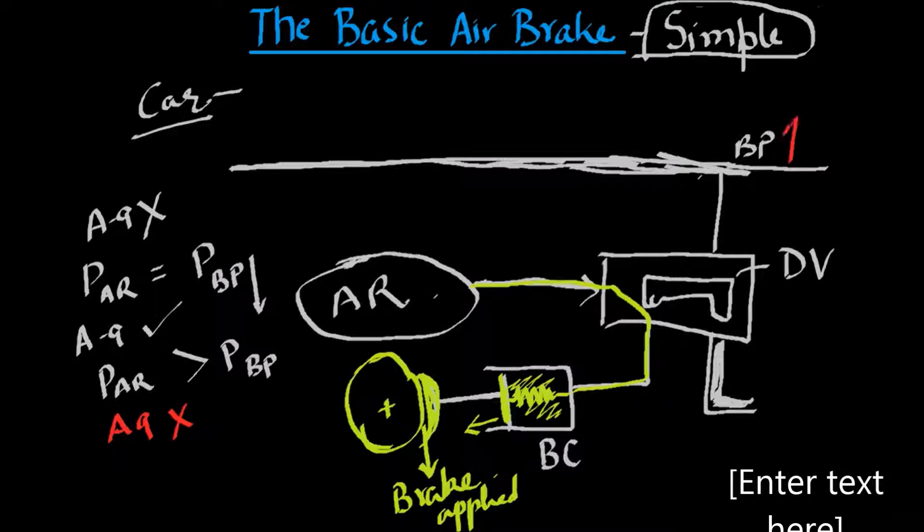In such a case, the A9 is now brought to the release position. In this case, the BP pressure raises. A raised BP pressure will cause the slider to move back and the BP and the AR are then connected.